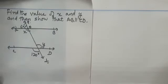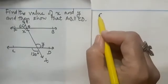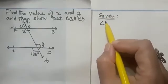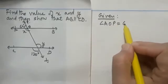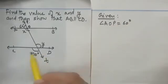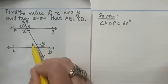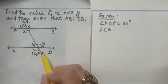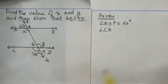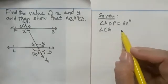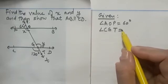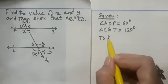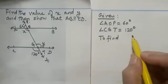First, we write down what is given. In this question, angle AOP is 60 degrees. We can label this point G, so angle CGT is 120 degrees. This is given, and we have to find the values of x and y and also show that AB is parallel to CD.